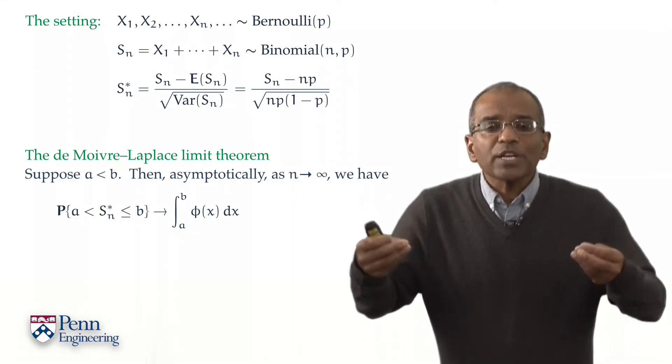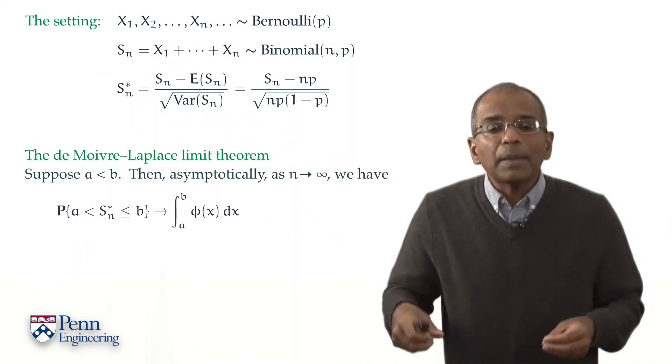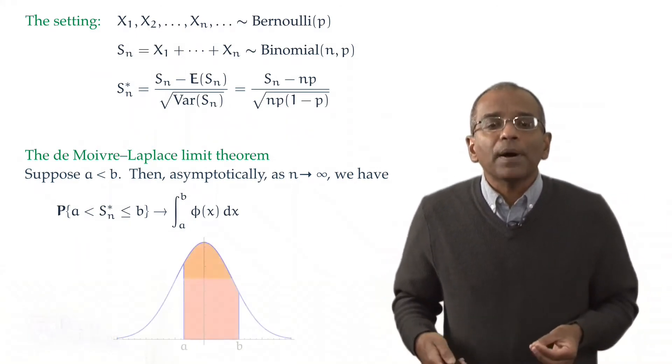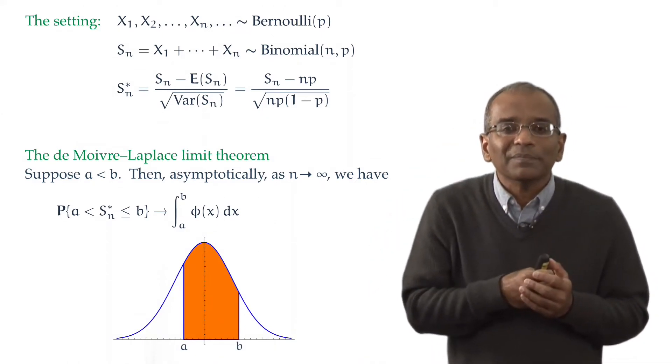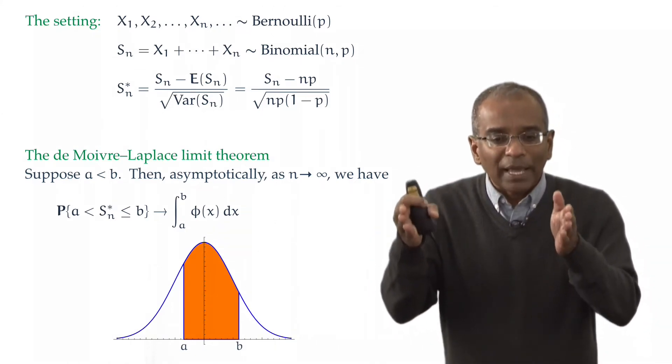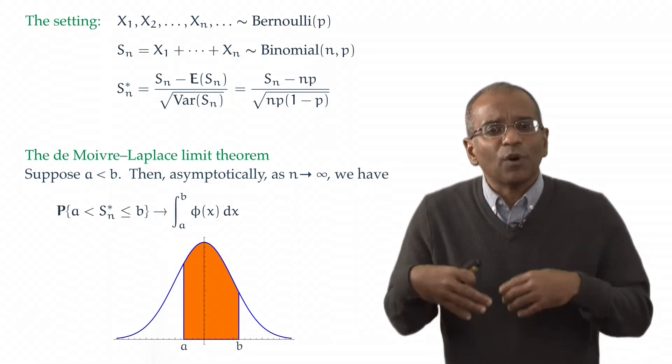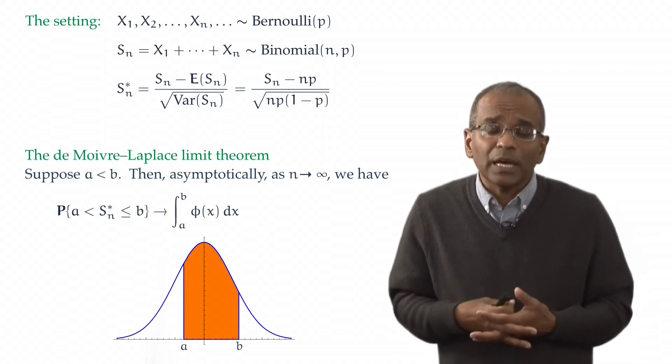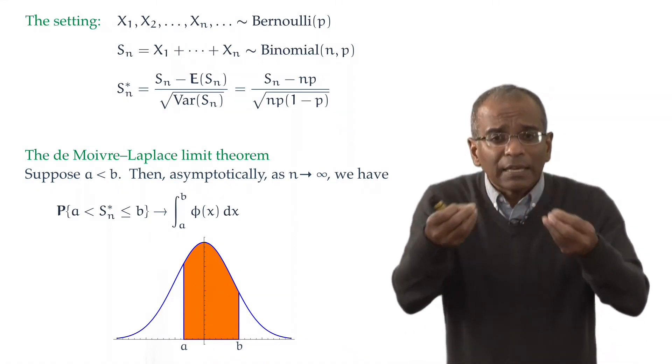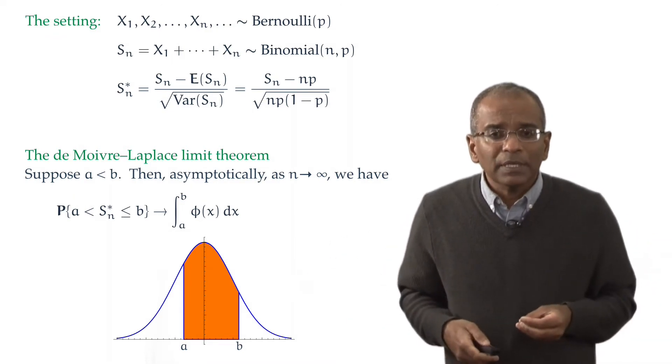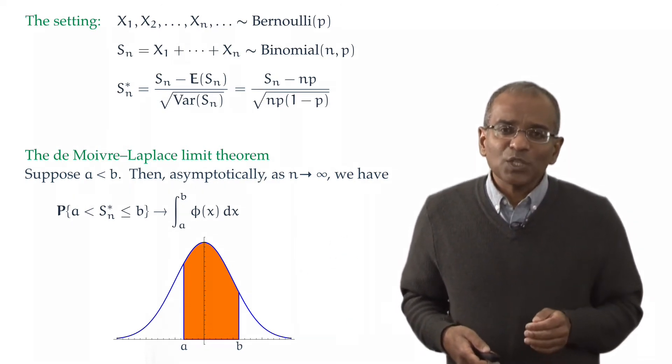The approximation by the bell curve says that the sum of those probabilities may be well-approximated by the area under a bell curve, and the area being from A to B. So that integral notation just stands for area. And if you're not familiar with the integral calculus, just think of it as an area under a given function, a given curve.